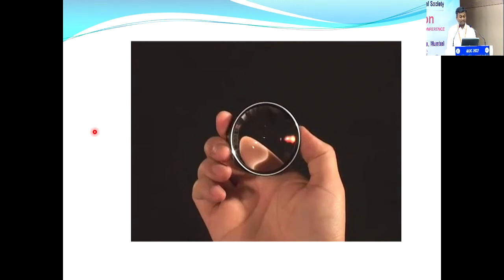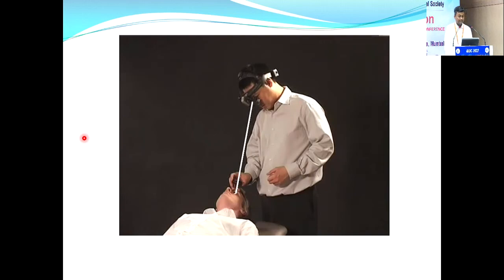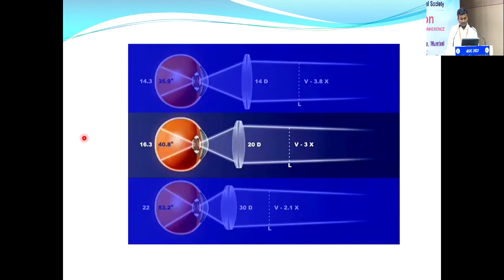This is the 20-diopter lens. When examining, the silver lining on the lens should be facing the patient's eye. As the examiner, once you put on the headset, adjust all the settings, then put the light on the patient's eye, bring the lens in front of the eye, bend backwards, and adjust the light so it goes directly into the eye for a good view.